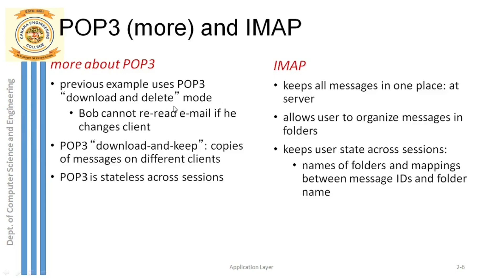Download-and-keep mode is the safest mode. The copy of emails will be saved in the POP3 server, so copies of the messages remain available. Different clients — whether smartphone, laptop, or college system — will each receive the same copy of all emails from the POP3 server.